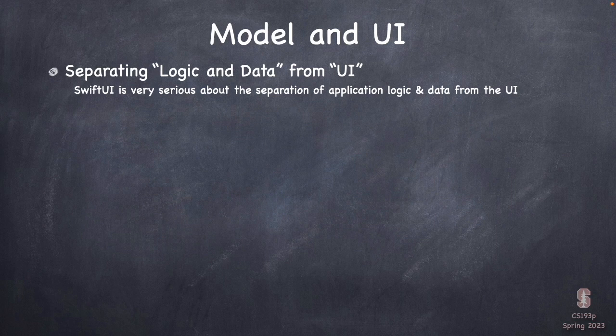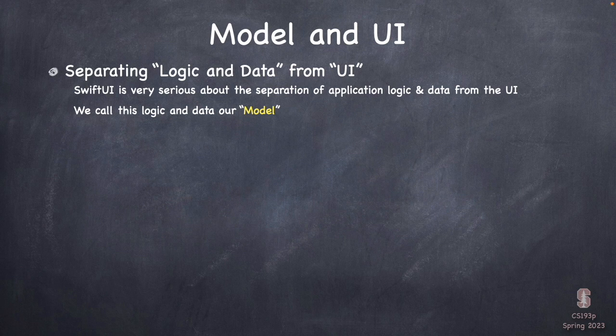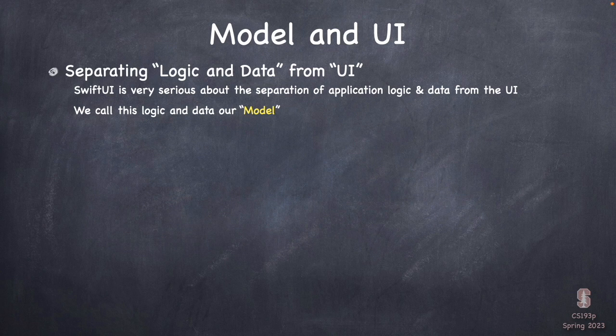SwiftUI is all built around this idea that you're going to have your data and logic — what your app does — over here, and then you'll have the UI that shows that to the user as a separate thing. The logic and data side — in our Memorize app, it's what happens when you click on a card and whether cards are face up or face down. We call that part of our app the model.